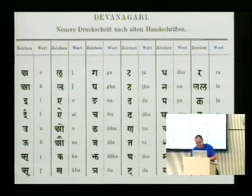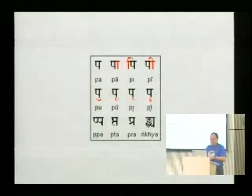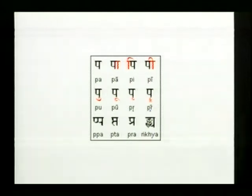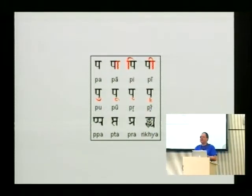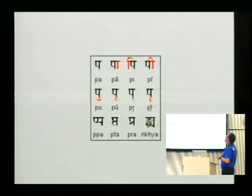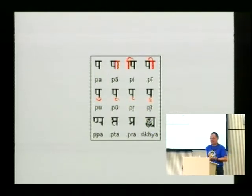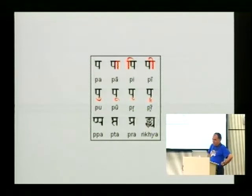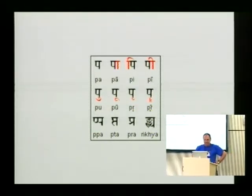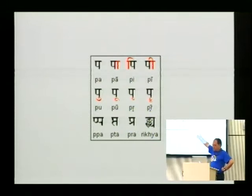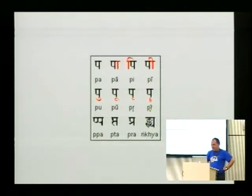Omniglot contains tables of scripts and sample text and explains how a script works. Here you see how Devanagari works: one sign stands for a certain syllable. For example, the first one is 'pa', and then you can modify the vowel by modifying the sign. You add modifiers for long R, for E, for long I, and so on.